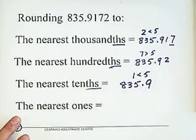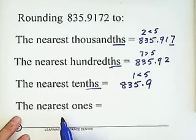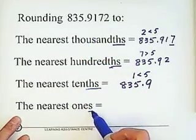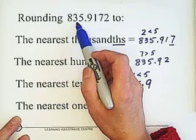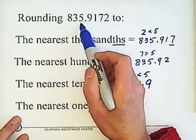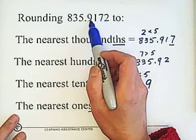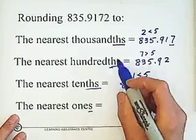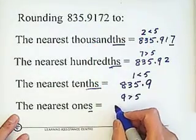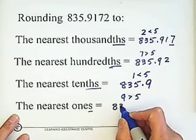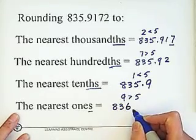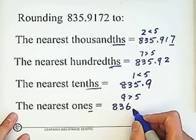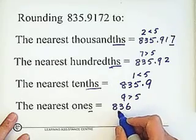The decimal point is still here. For the nearest ones, that is the first digit on the left side of the decimal point, which is 5. Look at the right side: 9 is greater than 5, so we add 1 to the rounding digit, which gives 836. The decimal point is still here — you don't need to write 0.0, just write 836.